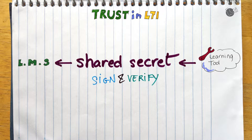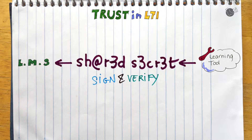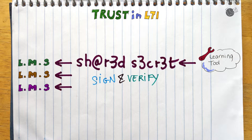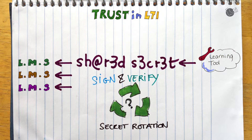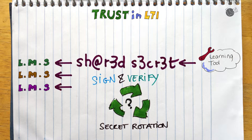The platform did not really control the strength of the secret — it could refuse a secret coming from a tool, but really the tool was generating it. Additionally, nothing prevented the tool from sharing the same secret with many platforms. So if one side leaked the secret, both sides were compromised. And finally, changing the secret was rarely done because it was quite complicated.